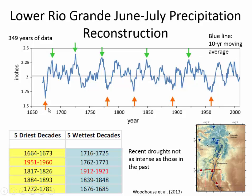The blue line is the estimated precipitation going all the way back to the mid-1600s. I noted where there were droughts with orange arrows and the rainiest years with green arrows, summarized in a table. One thing that pops out is the 1950s drought. You can see other droughts in the 1900s, around 1825, the 1770s, and some intense drought early around 1664 and 1673. So there are records going all the way back to the 1600s.